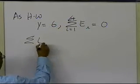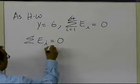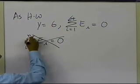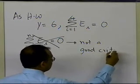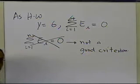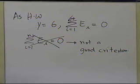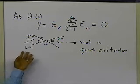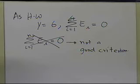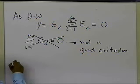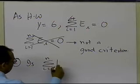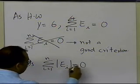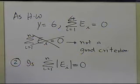The summation of the errors itself is not a good criterion. Somebody might say the reason you think that's not a good criterion is because you had negative errors and positive errors, and the two simply canceled out. So maybe somebody might suggest: is simply adding the summation of the absolute value of the residuals equal to zero a better criterion?